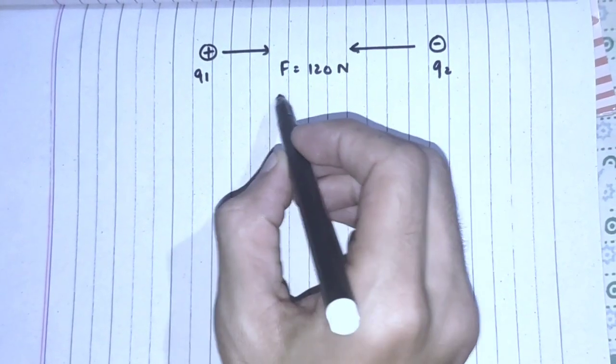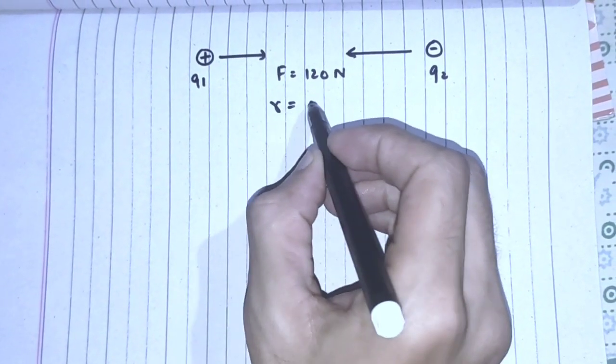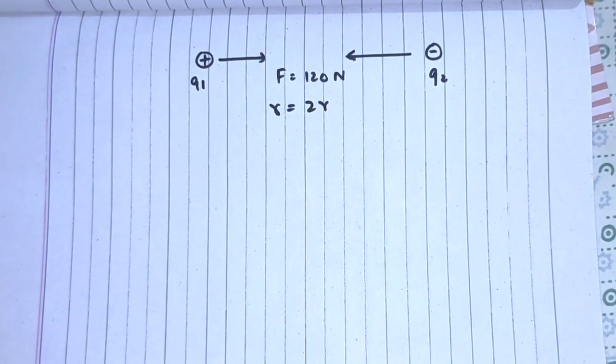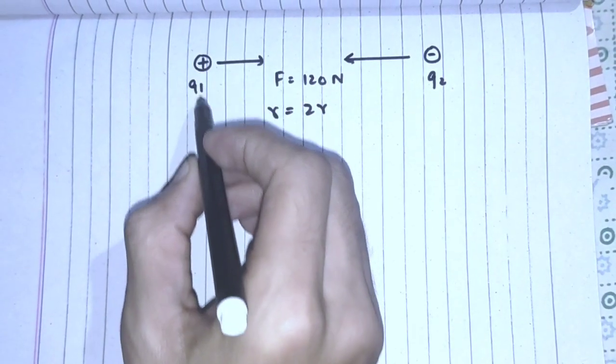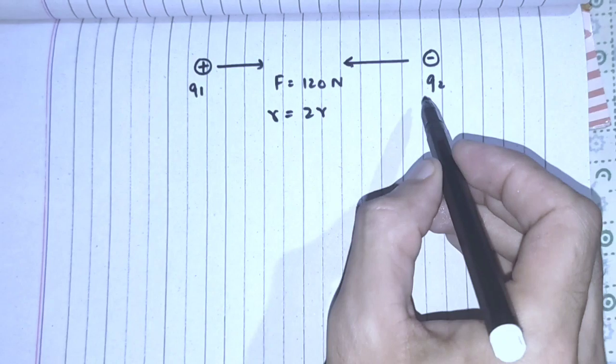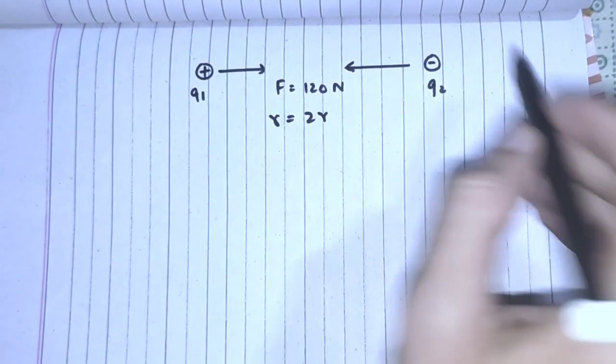The condition given is that if r becomes 2r. It means that these two charges were at a distance r from each other. Now we double the distance.